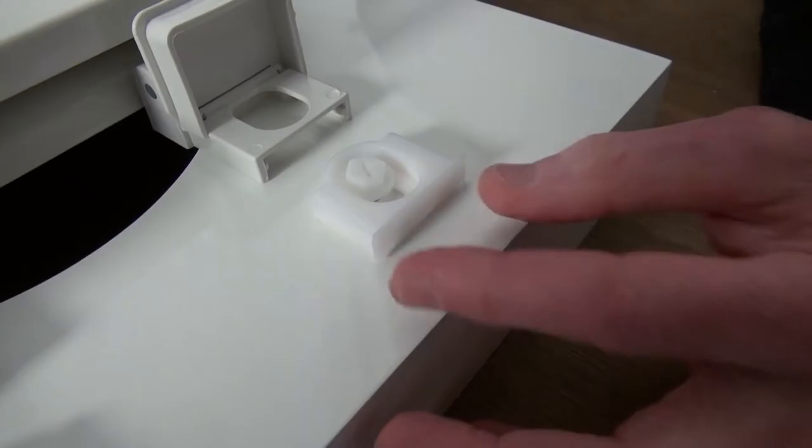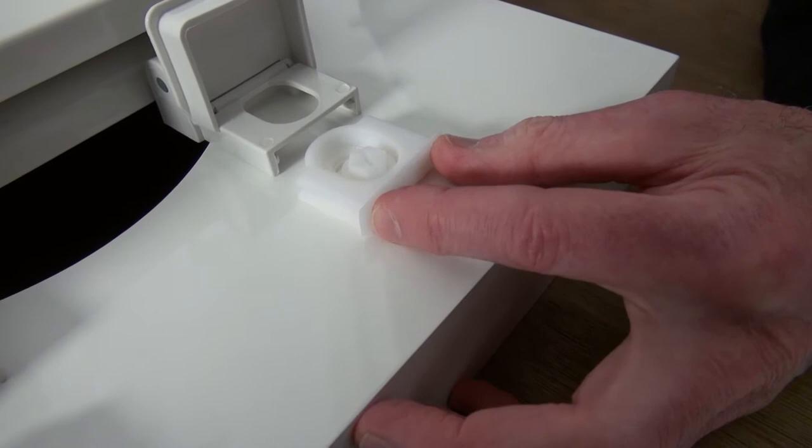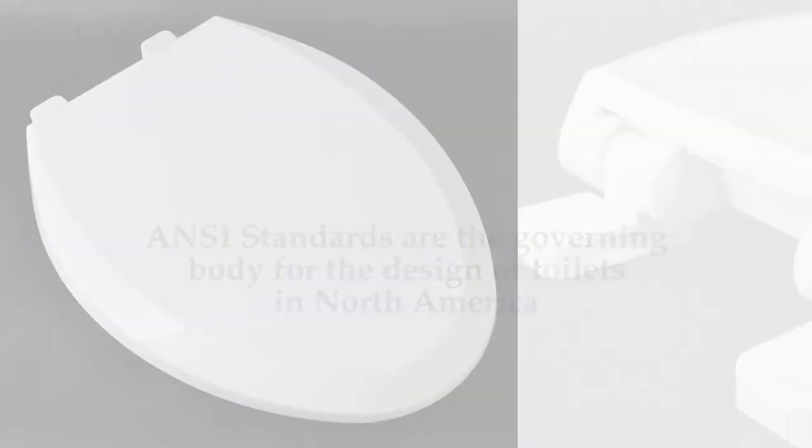Let's take a look at the Vari-Adjust hinge. This is a flexible feature that allows the seat to be slid backwards and forwards on the bowl for the perfect fit on most ANSI standard toilets. ANSI standards are the governing body for the design of toilets in North America.